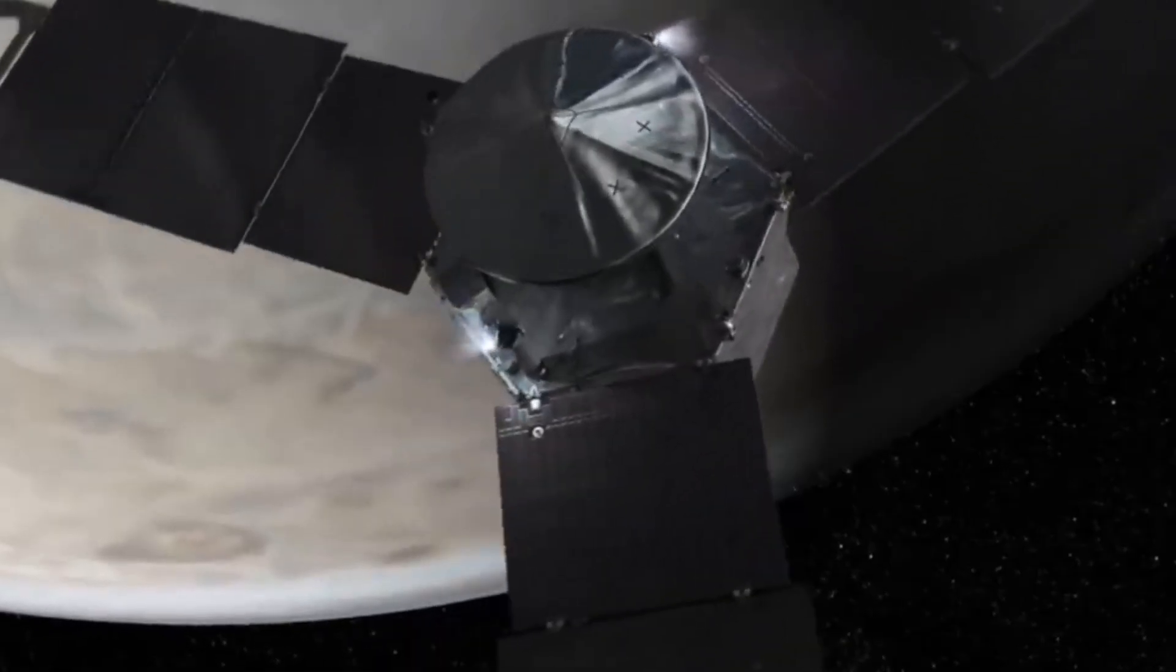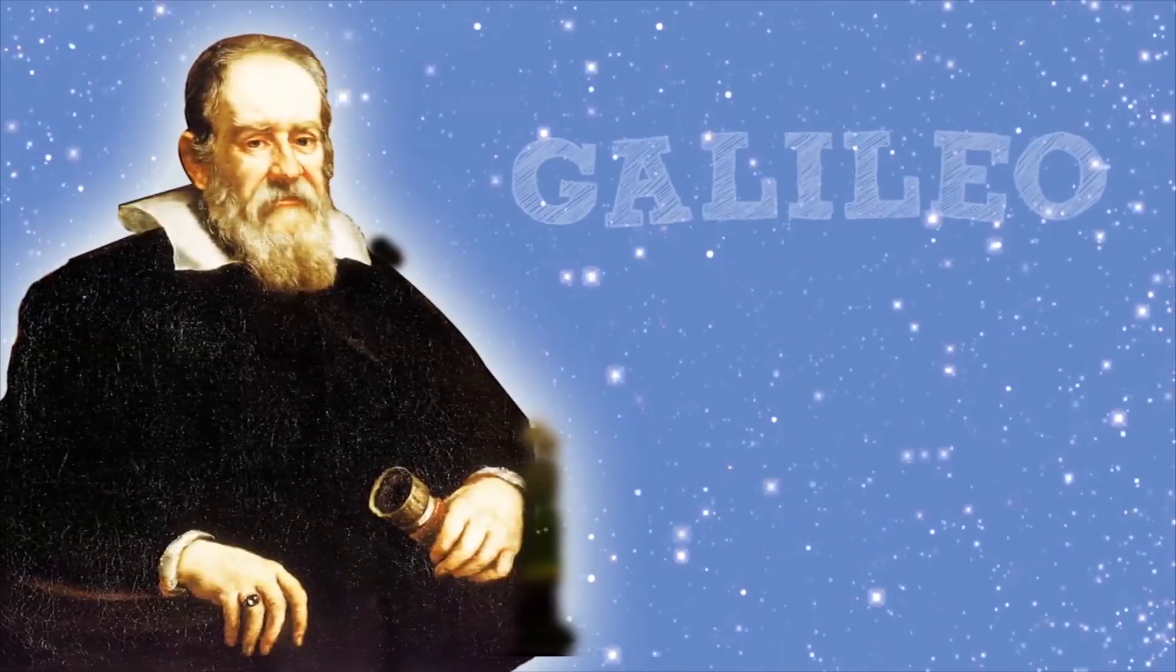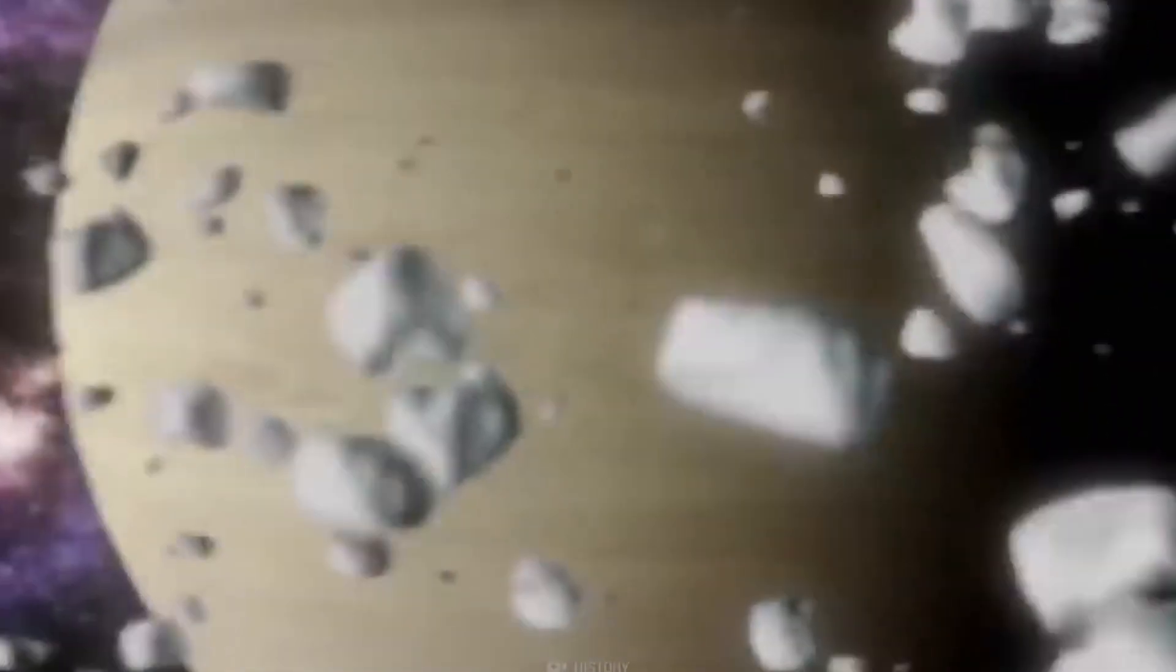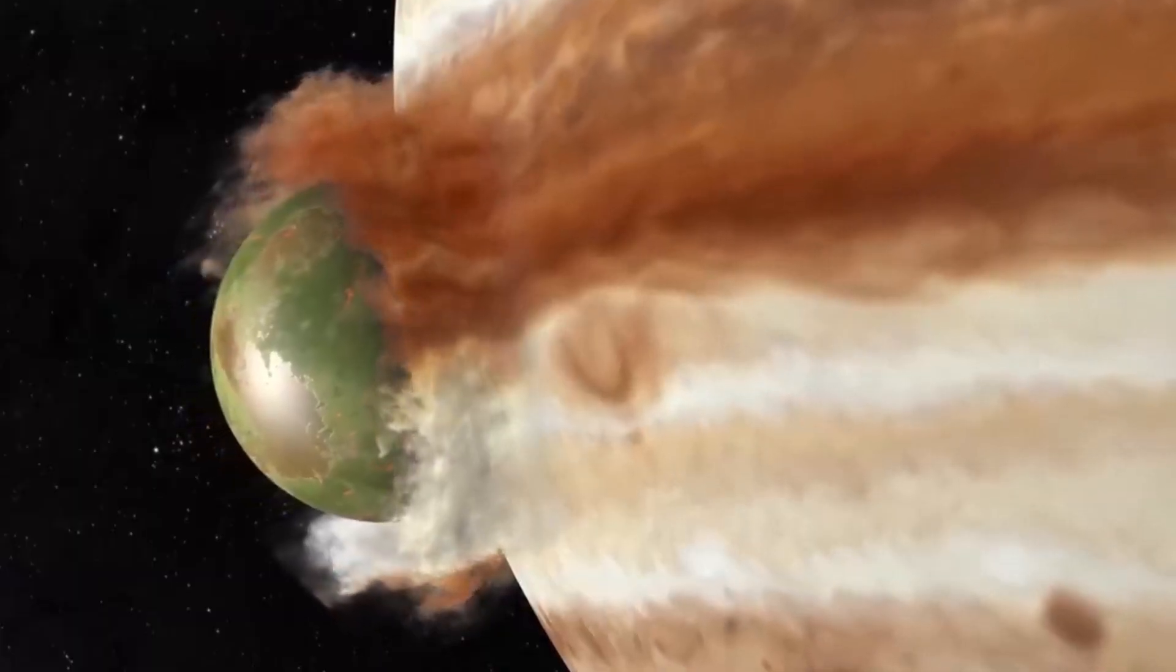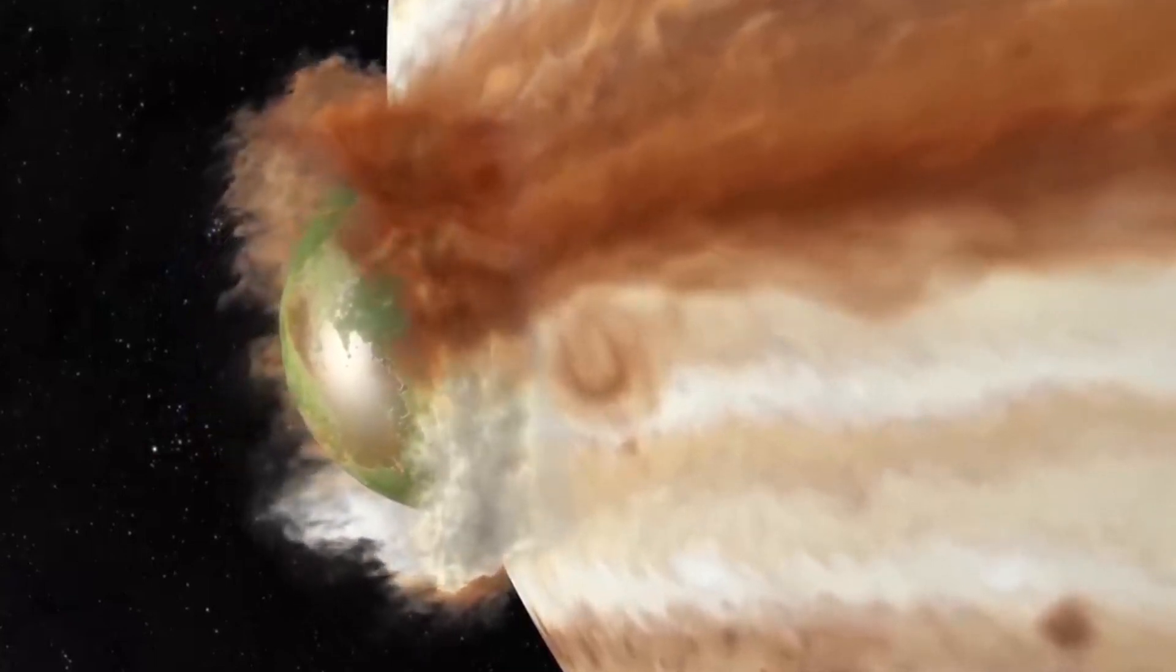According to one theory put out by Galileo scientists, the innumerable comets, asteroids and other tiny bodies that Jupiter has drawn in and consumed when they get too close are the source of the planet's heavy components.